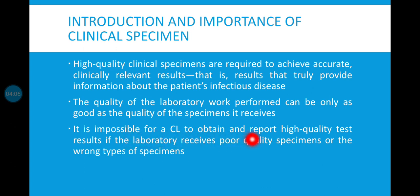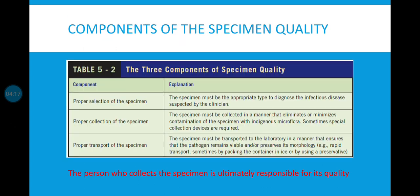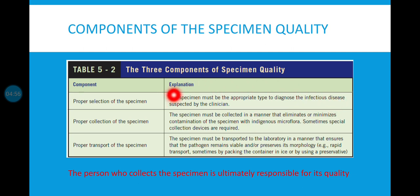There are three components of specimen quality. Number one: proper selection of the specimen. The specimen must be the appropriate type to diagnose the infectious disease suspected by the clinician. For example, if you have a urinary tract infection, you obtain a urine specimen. If it is a wound infection, you obtain a wound specimen. For central nervous system infections such as suspected meningitis, you collect CSF. If you select the wrong specimen, you will not achieve a proper diagnosis.